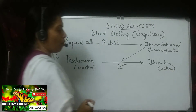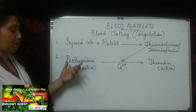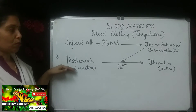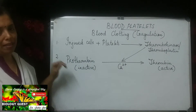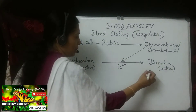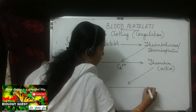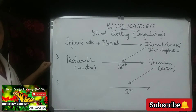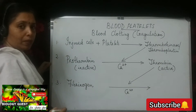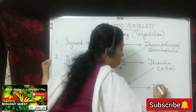Thrombin is the active form of prothrombin. That is the second step in blood clotting: thrombokinase acts as an enzyme and catalyzes the conversion of inactive prothrombin to active thrombin in the presence of calcium ions. In the third step, this thrombin acts as an enzyme and, in the presence of calcium ions, converts soluble fibrinogen — present in trace amounts in blood — into insoluble fibrin.